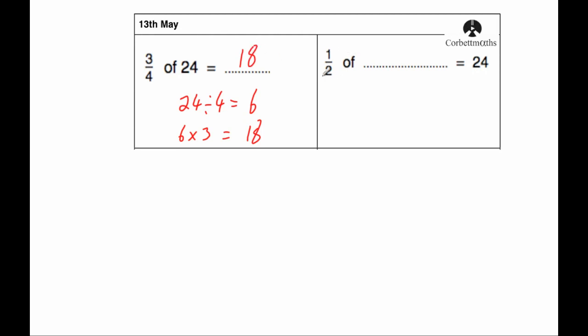And our next question, a half of which number is equal to 24? So a half of a number that's equal to 24, we'll need to multiply 24 by 2, we'll double it. So doubling 24 would be 48. So half of 48 is 24.